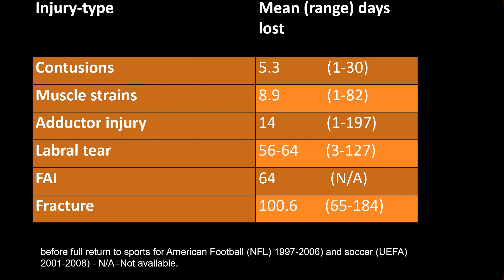This is a nice table that shows the mean days that players lose due to an injury, and it's very dependent on the type of injury. Contusions, you're out for about five days. Whereas with adductor injuries, you lose about two weeks. Labral tears, because they eventually undergo surgery, result in a much longer period away. That's also true for femoral acetabular impingement. And obviously for fractures there is the longest delay. The interesting thing is the range — it's a very large range, from one day to one month, true for basically all injury types except fractures, where you consistently have a very long recovery period.